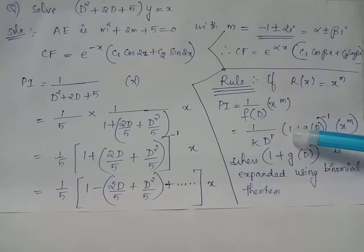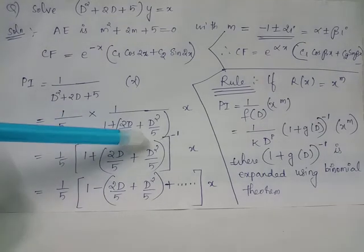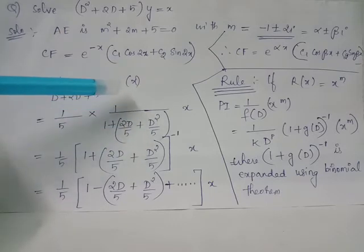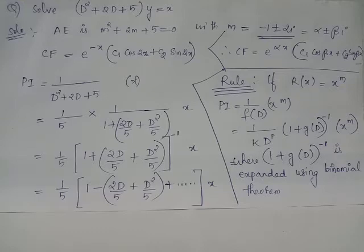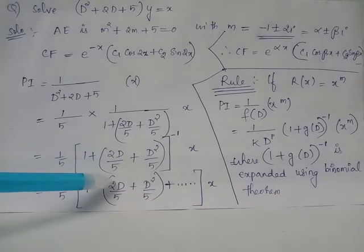In order to find the operator 1 plus g of D the whole inverse, what we do is take this operator as the numerator. When this operator appears in the numerator it will appear with a power equal to minus 1. Just like 1 by y equals y inverse, we have 1 by 1 plus 2D by 5 plus D squared by 5 equals 1 plus 2D by 5 plus D squared by 5 the whole inverse, which acts on x.